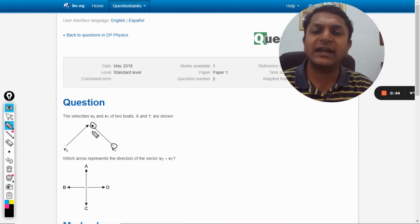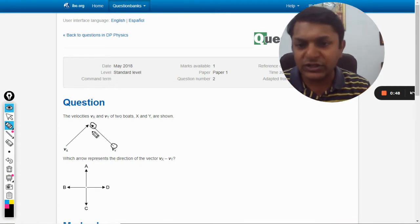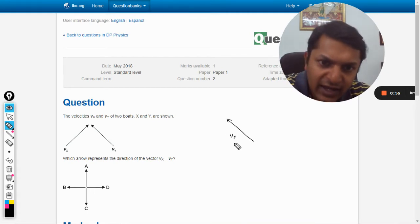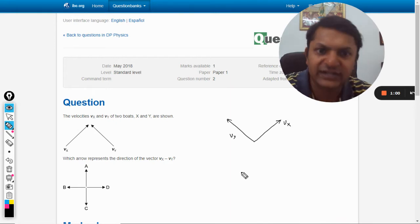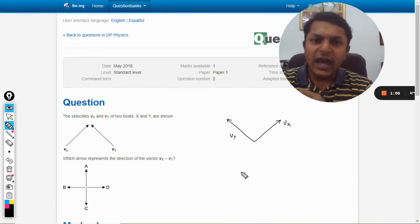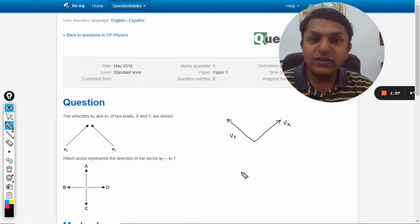This is a standard method that I am going to discuss now. So these are the two vectors. This is going to be vy and this is going to be vx. These are the two vectors, one is vx, another is vy.